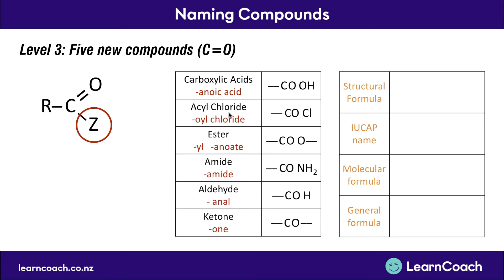We've got five new types, and every one of these types has a dash CO to start with — a C with a double bonded O — and it's just the Z group which is changing. Z isn't actually an atom; it's just a name for whatever else could go there. For a carboxylic acid that's a hydroxyl group, for an acyl chloride it's a chlorine group, for an ester it's an oxygen and another chain of carbons, and so on. We're going to cover these one by one.